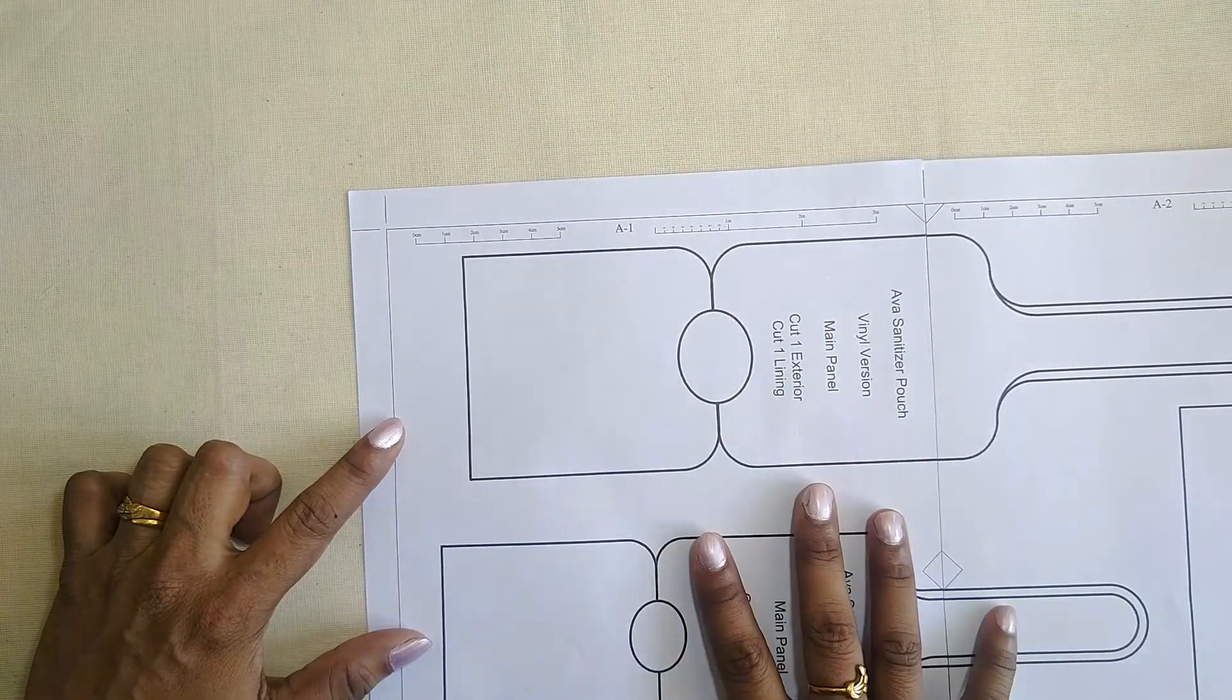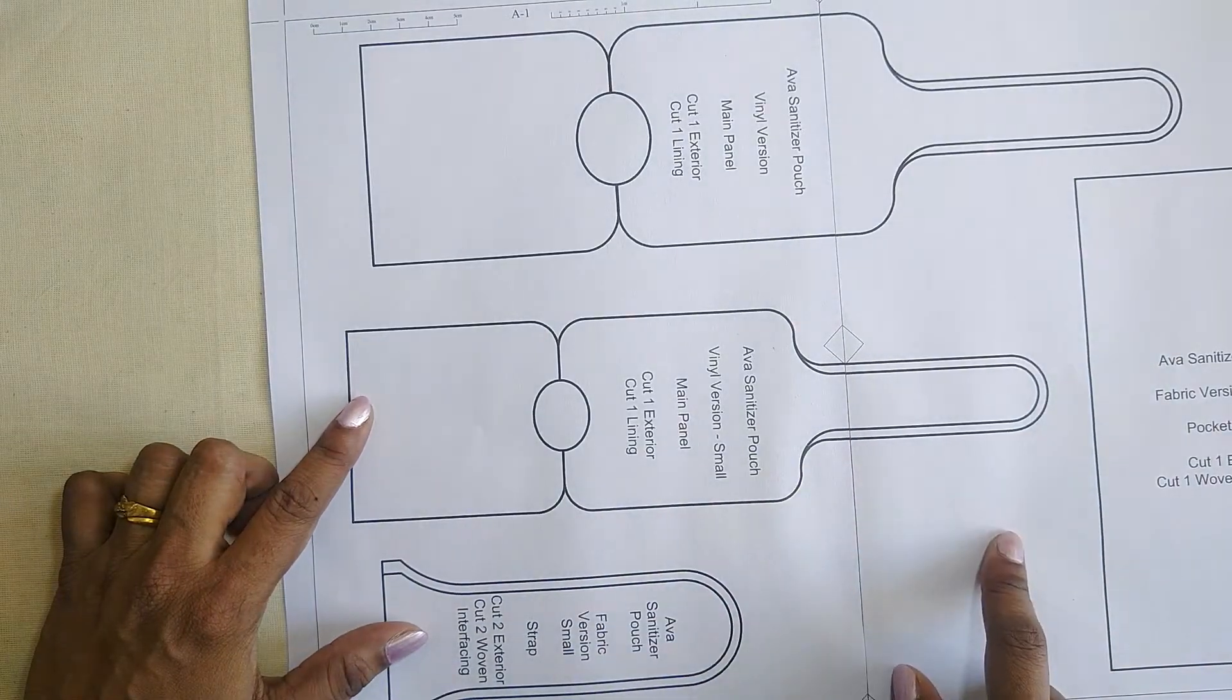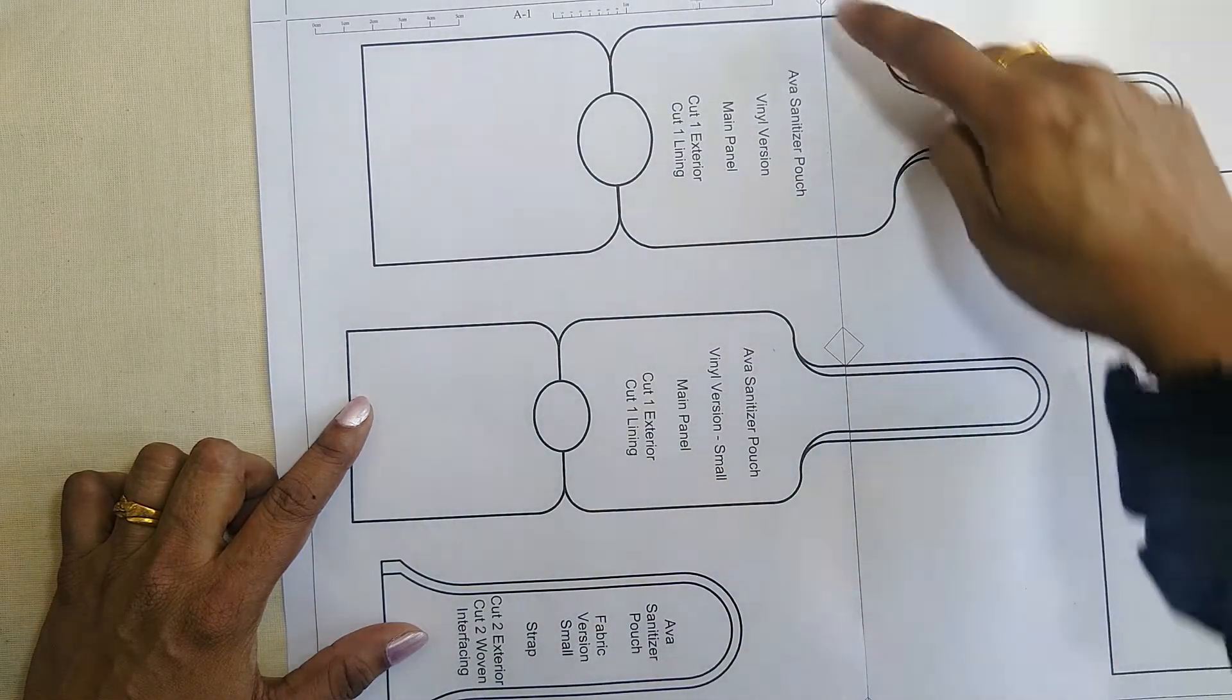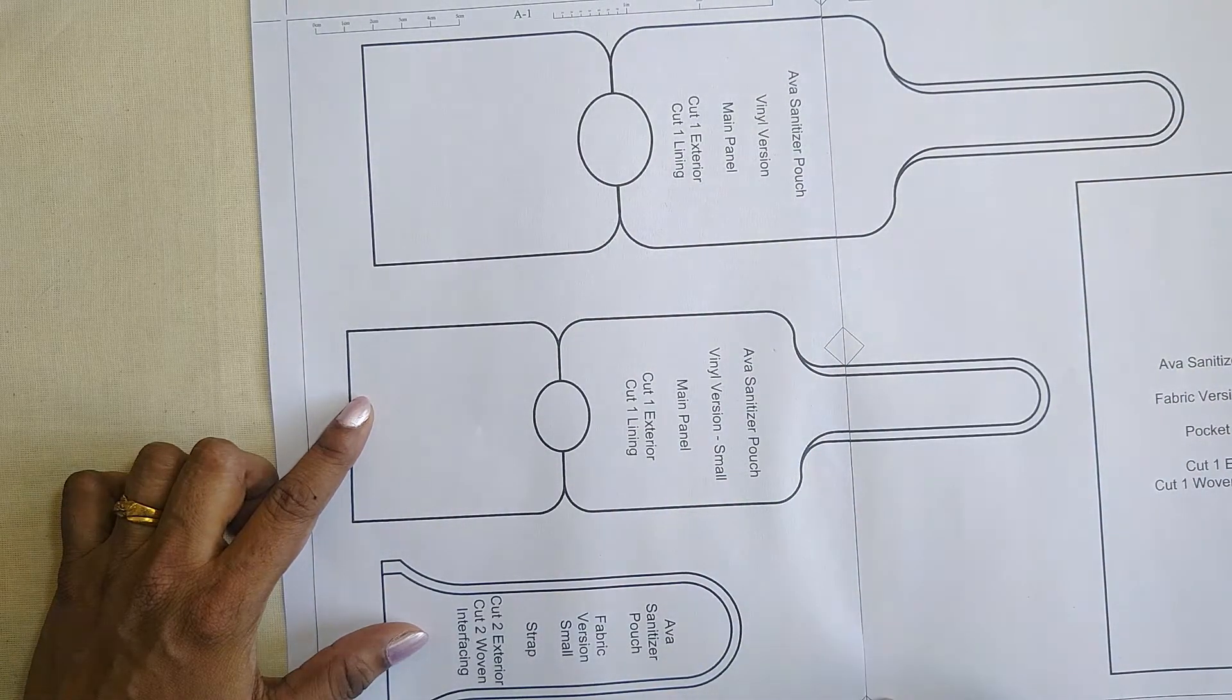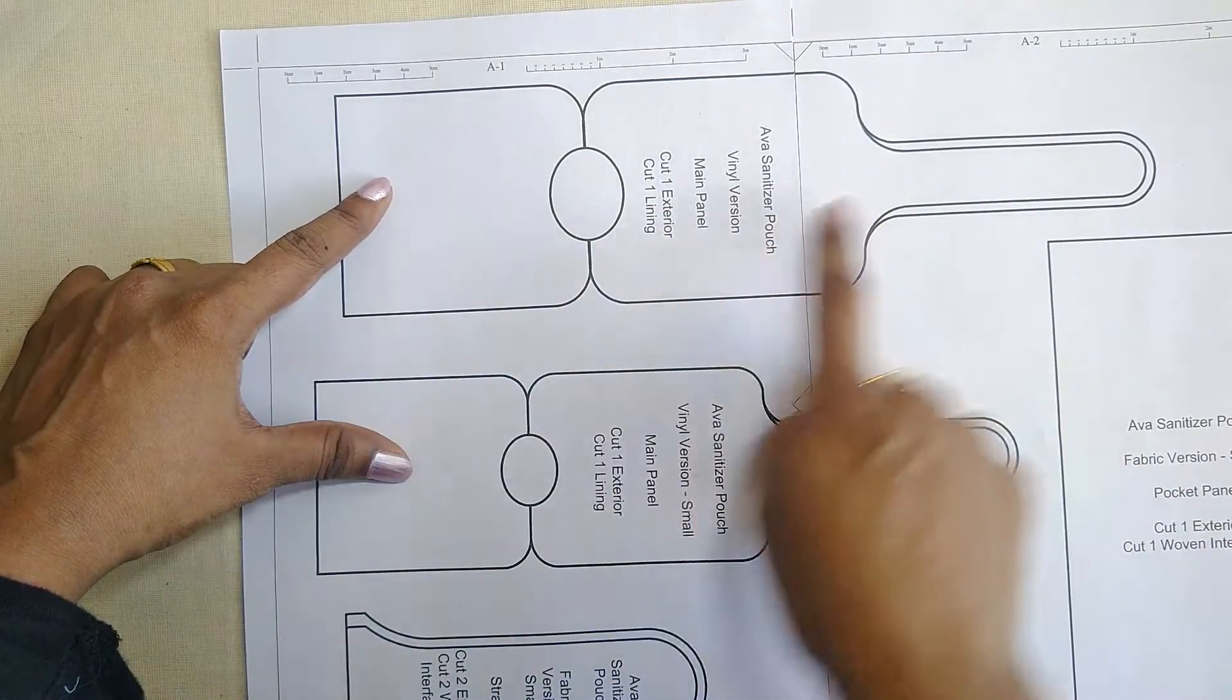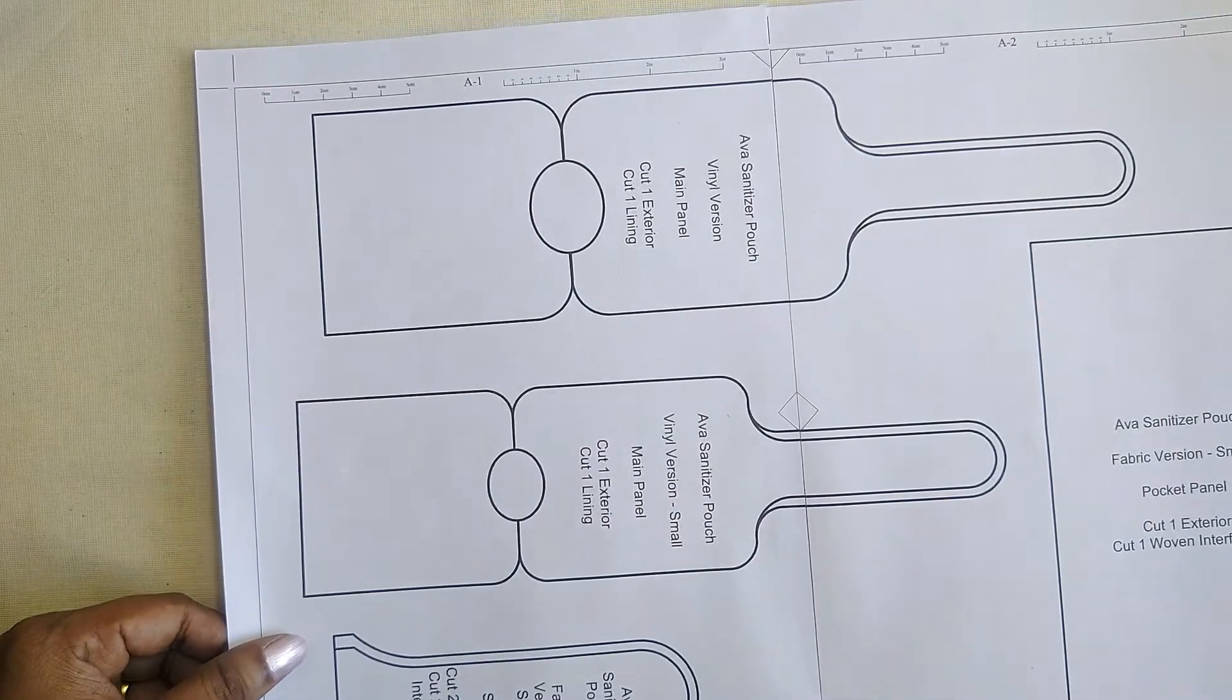The first two pages you will have to join at the matching shapes in order to get the full size pattern for the vinyl large and small versions.